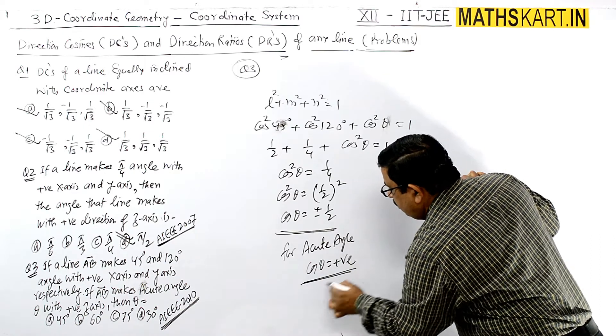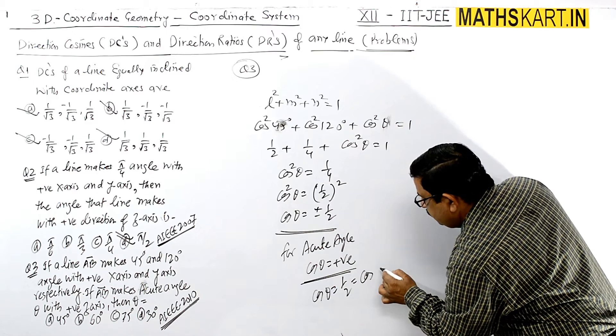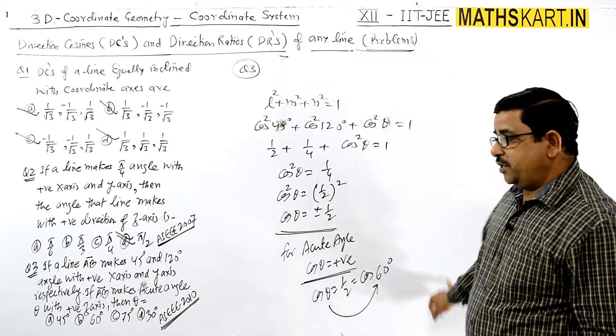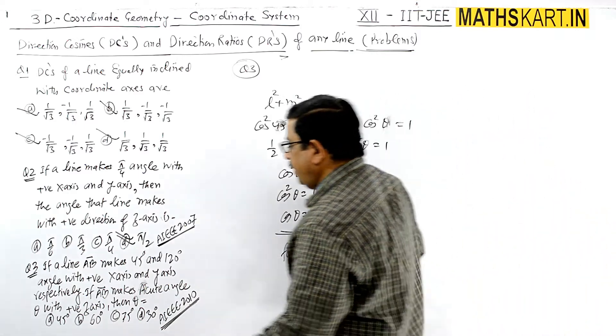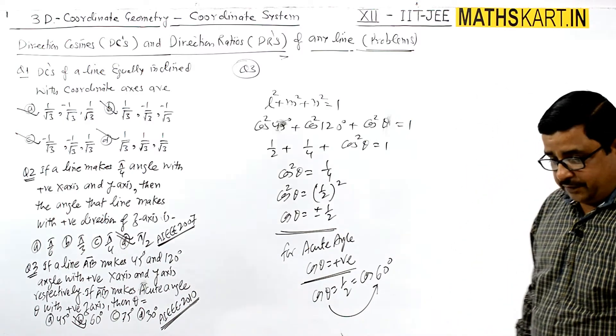But he has asked for the acute angle, and the acute angle will have a positive value of cos θ. The value where cos is 60°. So θ = 60°. B option is correct here.